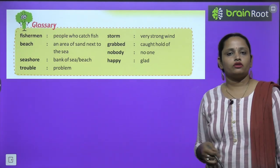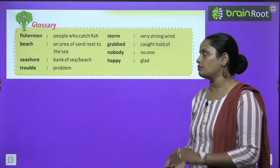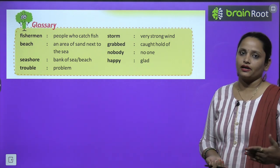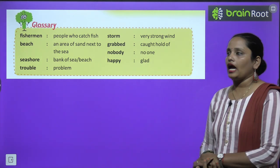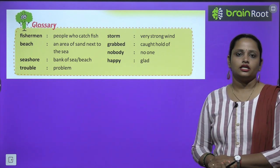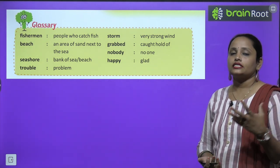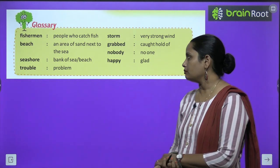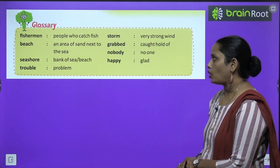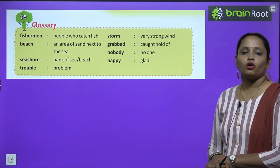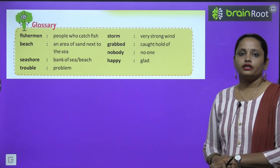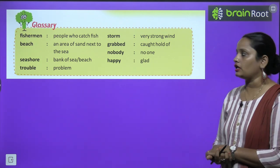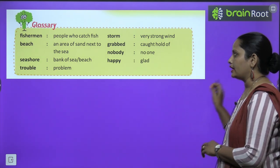So children, this was the story of Dory. Now let's move on to the glossary. Fisherman means people who catch fish. Beach is an area of sand next to the sea. Seashore means bank of sea or beach. Trouble means any problem. Storm means very strong wind. Grabbed means caught or hold of — to grab something. Nobody means no one. Happy means glad.